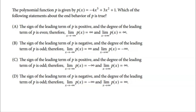The first question says the polynomial function p is given by negative 4x to the fifth plus 3x squared plus 1. Which of the following statements about the end behavior of p is true? To find end behavior, first we look at the degree of our polynomial. If the degree is even, both ends do the same thing — both go up or both go down. But this function has an odd degree: 5 is an odd number.